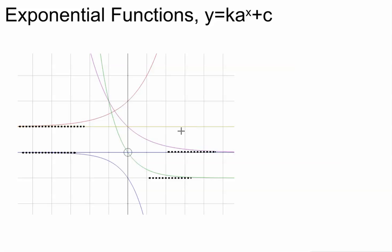They cross the y-axis in different places, and the position of their asymptote is different based on the values of k, a, and c.